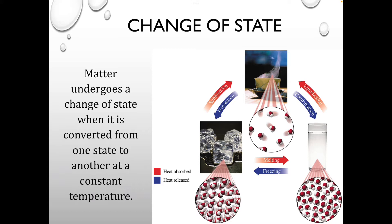Today we are going to focus on phase changes. We've talked a little about phase changes before, but now we're going to talk about them in terms of thermochemistry. Matter is going to undergo a change of state when we're converting it from one state to another at constant temperature — and this is really important. During a phase change, the temperature actually doesn't change. If you think about water boiling on the stove, water boils at 100 degrees Celsius, and no matter how much you keep heating it, the temperature of the boiling water will never go above 100 degrees Celsius until every single drop of water is completely converted into steam.